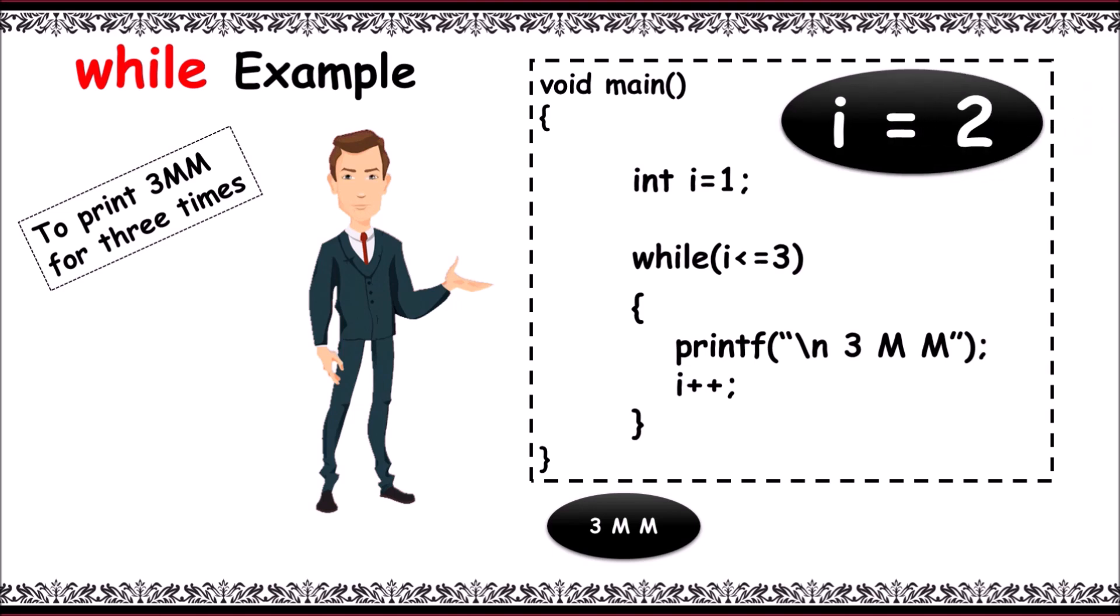Now the control goes back and the condition is evaluated: i less than or equal to 3, that is 2 less than or equal to 3. As the condition is true, it enters into the block and prints 3mm for the second time.